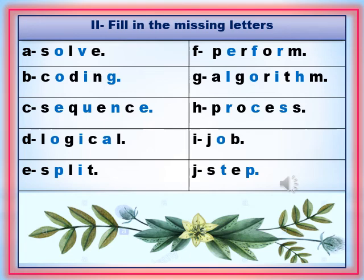Number F: E, F, R are the missing letters and the correct word is perform. G: L, O, I, H are the missing letters and the correct word is algorithm. H: R, C, S are the missing letters and the correct word is process. I: O is the missing letter and the correct word is job. J: T and P are the missing letters and the correct word is step. This is the end of the chapter.